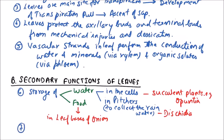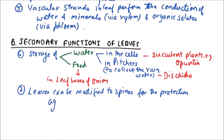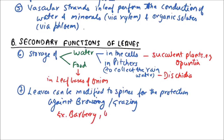Next function: leaves can be modified to spines for protection against browsing or grazing. Plants that do this include Berberis (Barbary), Opuntia, and Argemone mexicana.